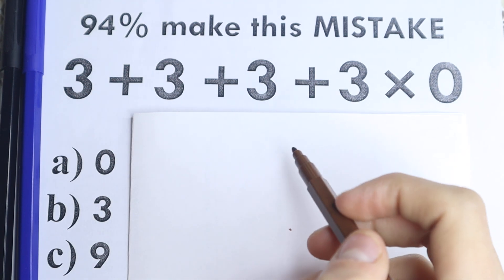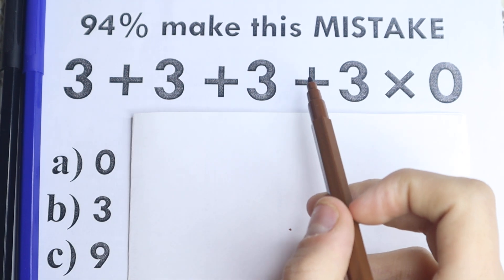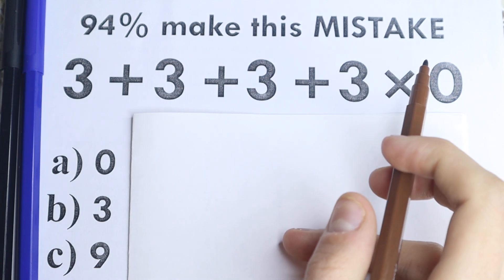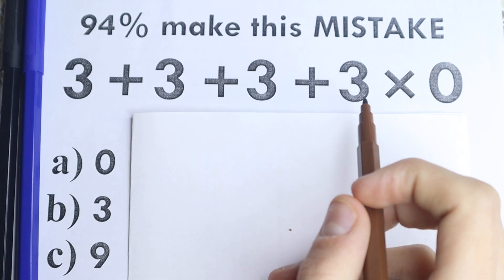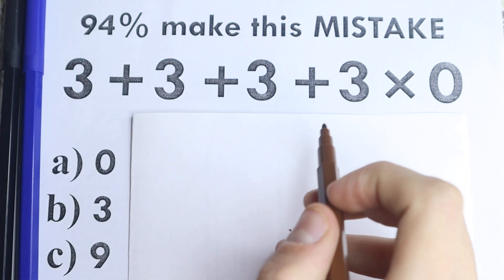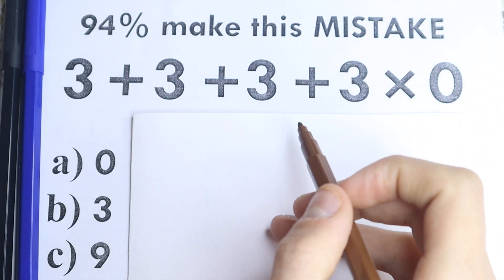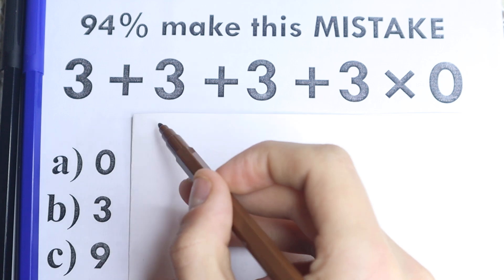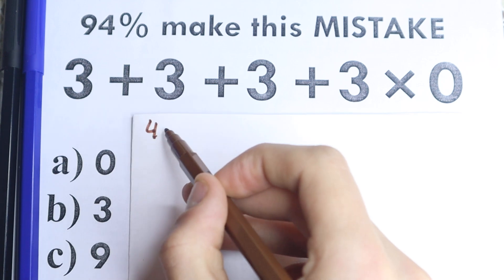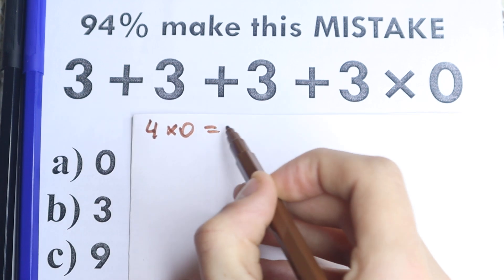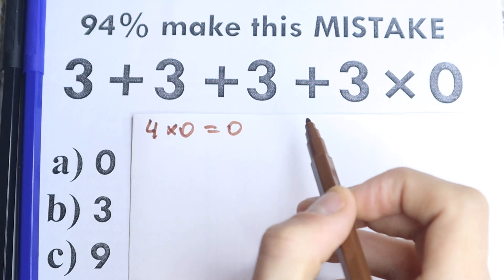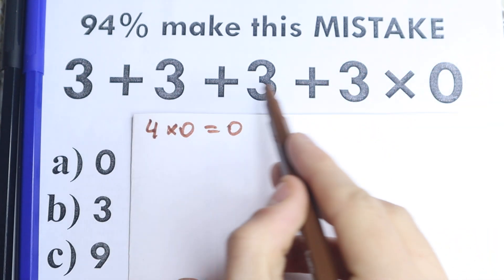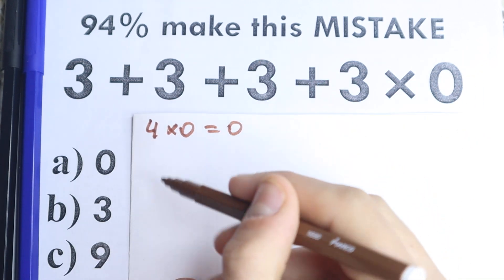So here is our question, and I want to mention one really interesting point: obviously, whatever order of operation we select is going to create a different answer. So we need to understand one really important thing — what is the correct order to do this problem? Because from school you need to know that no matter what number you multiply by 0 — for example, 4 times 0 — if you multiply by 0, you get 0.